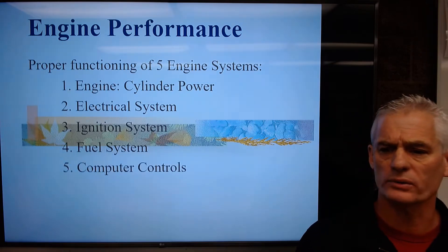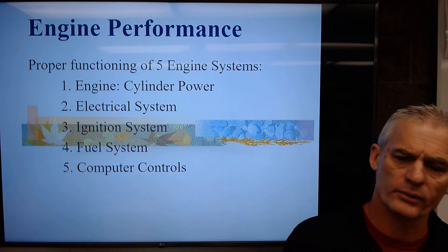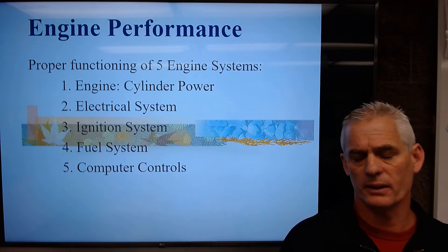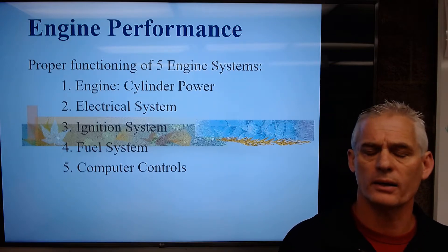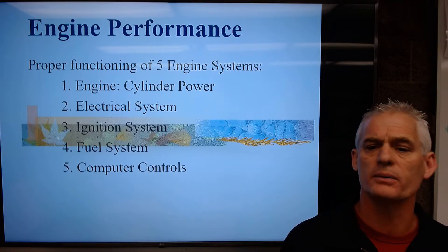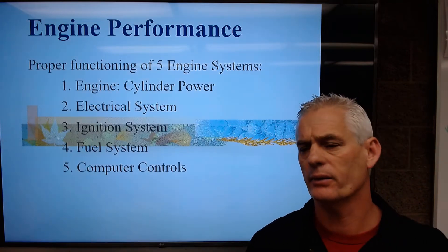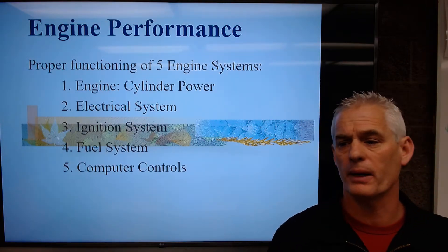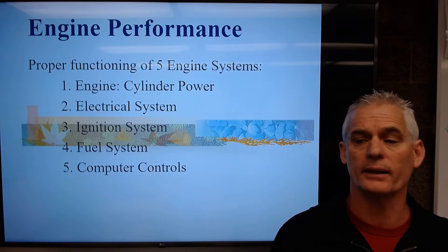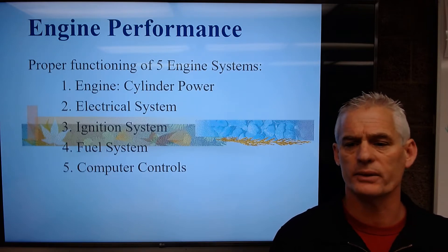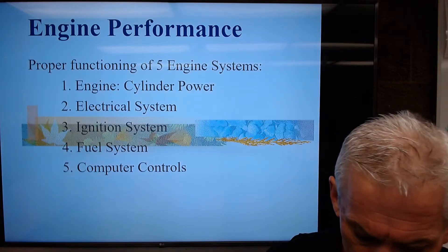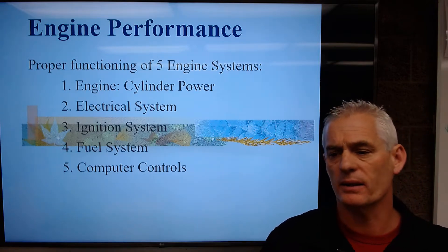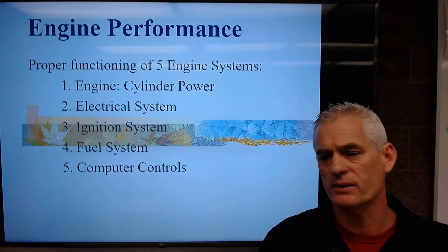Our fifth system is computer controls — all those systems that regulate the other systems. The PCM, which is the engine computer, regulates the fuel system, ignition system, and charging system. It doesn't regulate cylinder power directly, but it monitors it via a crankshaft position sensor, looking at acceleration and deceleration rate and engine RPM, then turning on the check engine light if it detects a rapid deceleration — meaning a cylinder may be misfiring.